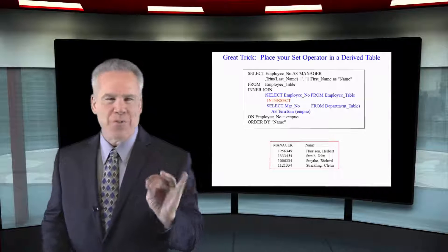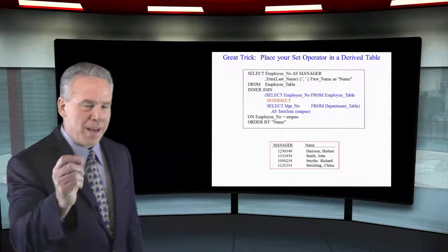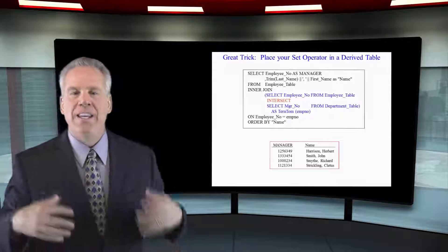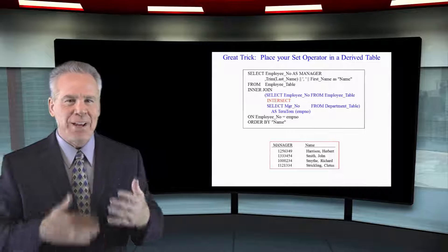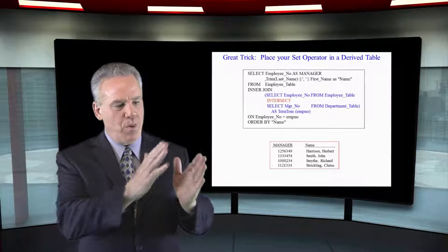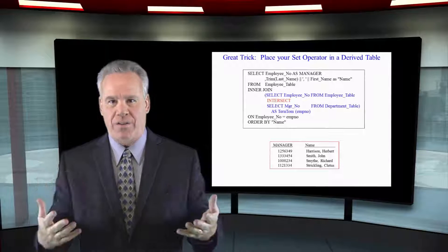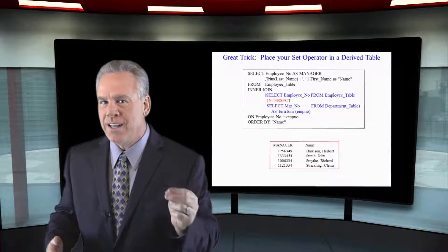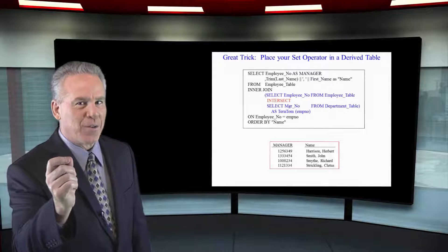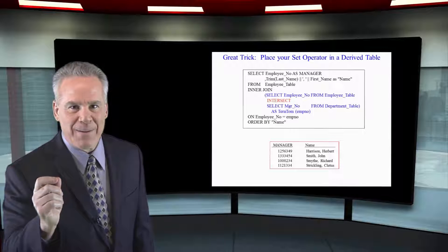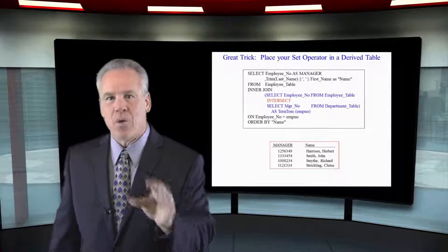Because we have to have an equal amount of columns in the top query and an equal amount of columns in the bottom query of any set operator query, sometimes it makes it difficult if you have a report with many columns that aren't part of this. But we can use a technique to build the set operator query in a derived table, and then join it back and get the answer set we're looking for.